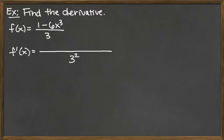So now the top is what's more complicated. It ends up being the derivative of the top, so d/dx of 1 minus 6X cubed times the bottom, which is 3.